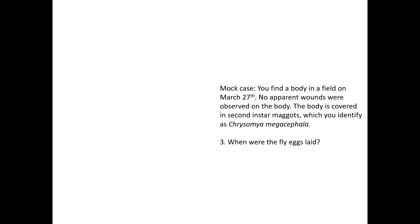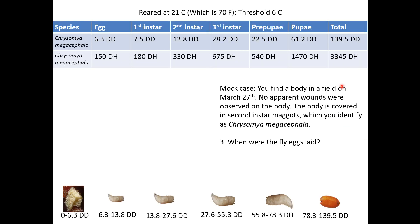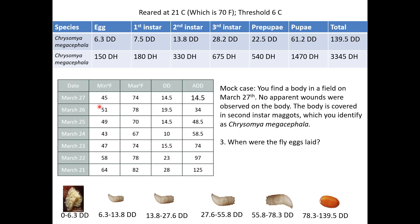Another question: I may want to know when the fly eggs were laid. Mock case — same exact scenario: body, no apparent wounds, covered in second instar maggots identified as Chrysomya megacephala. When were the eggs laid? Notice how different this is from 'how old were the maggots' — when you ask 'when,' I'm asking for a date. We know the second instar needs a minimum of 13.8 degree days, reached on the 27th, and maximum 27.6 degree days reached on the 26th. So the eggs were laid sometime between March 26th and March 27th. Give this in dates and make sure you have a range.